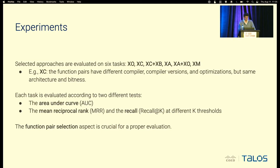Regarding the experiments, we identified six tasks to evaluate. For example, the cross-compiler task is the task where functions have different compilers, compiler versions, and optimizations, but the same architecture. Each task is evaluated using three different metrics: the AUC, mean reciprocal rank, and recall — so we take ranking metrics into account as well. We also noticed that function pair selection — how positive and negative pairs are created — does impact performance, and this is something that has not been highlighted in past papers.